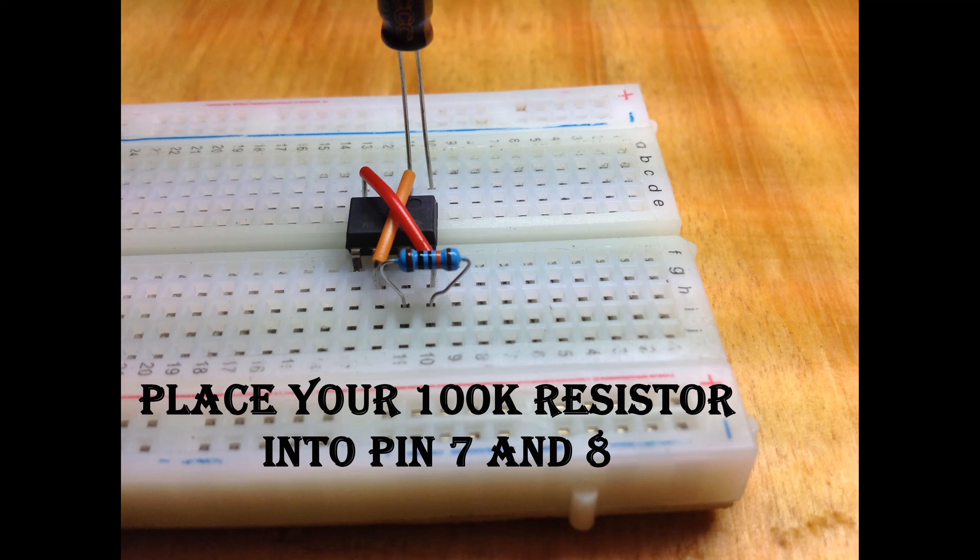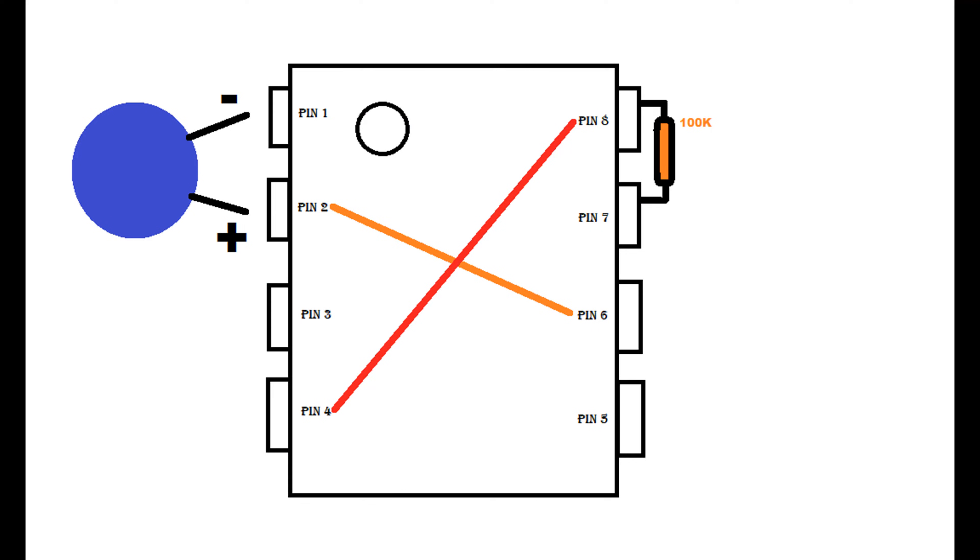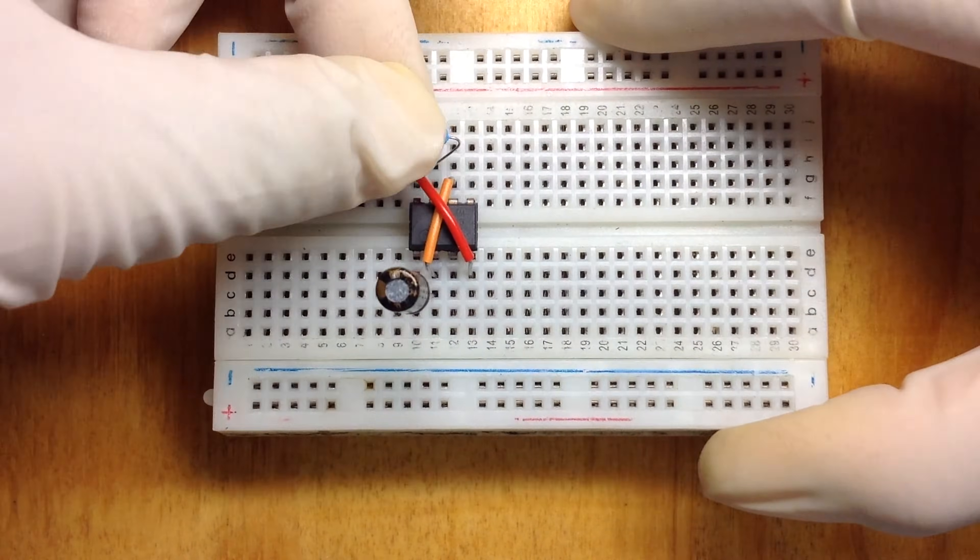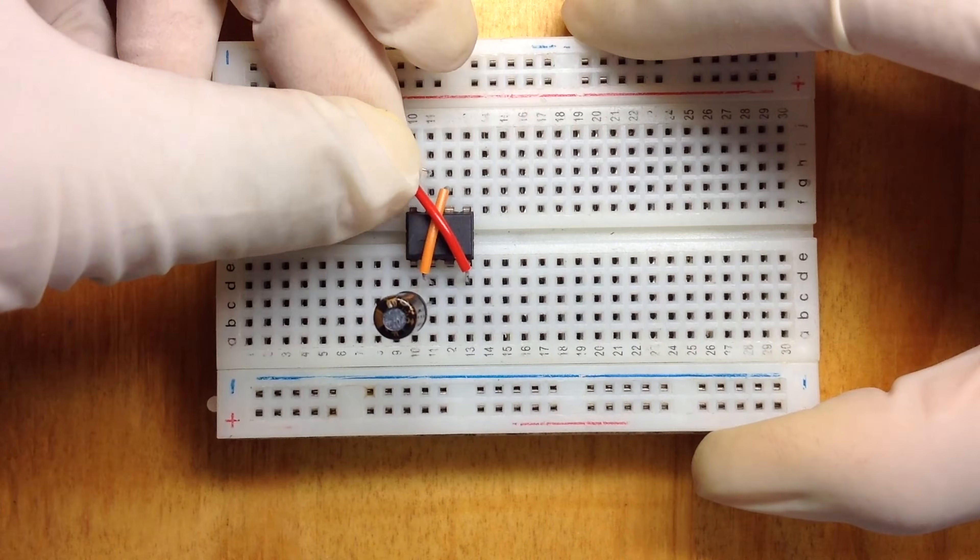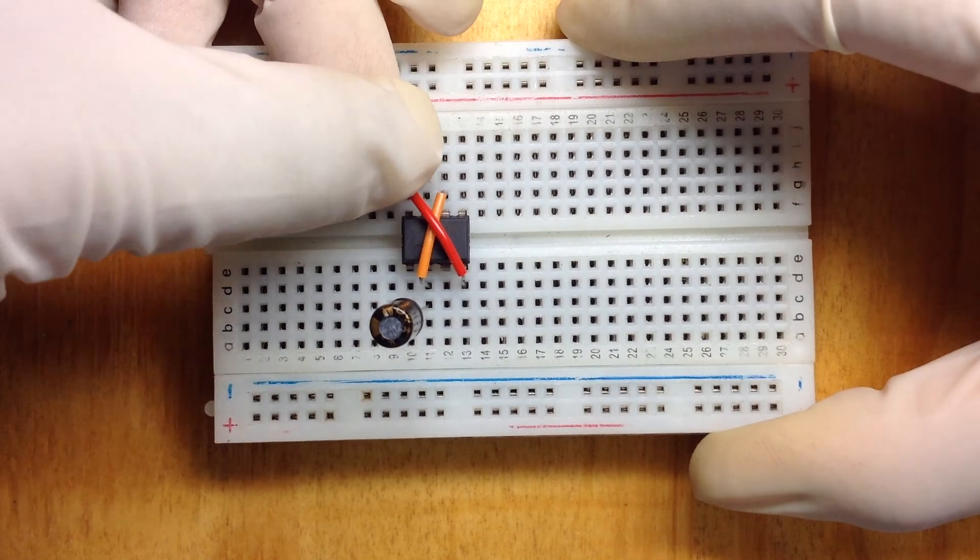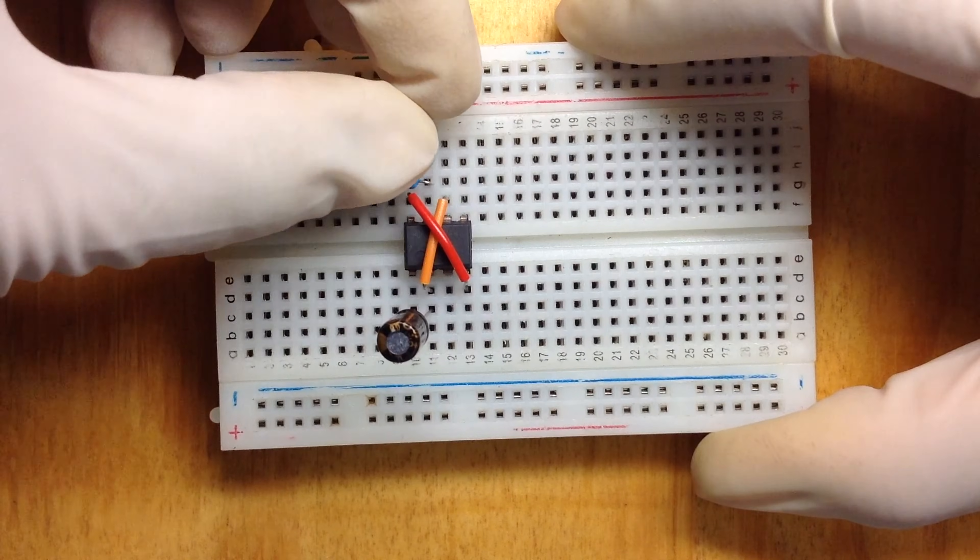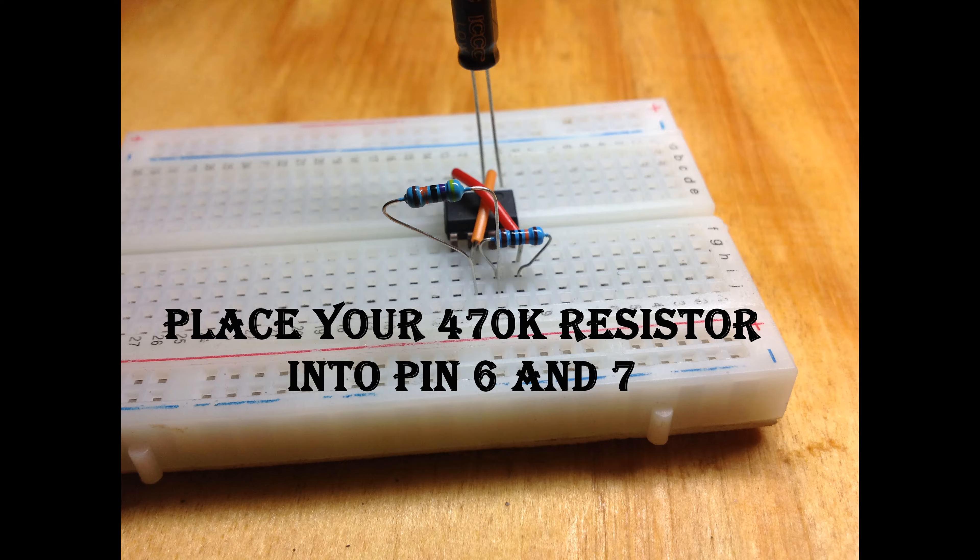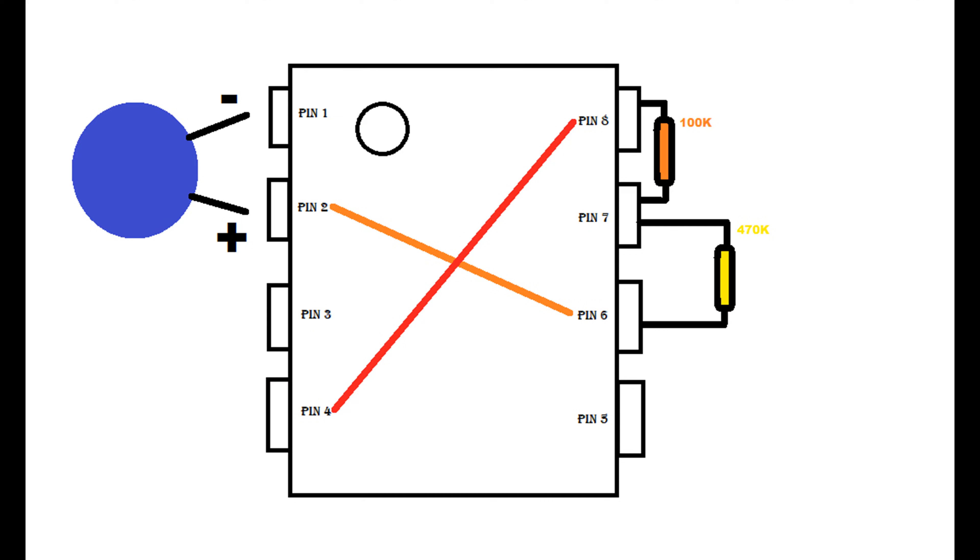Connect the 100k ohm resistor to pin 7 and pin 8 of the IC. Connect the 470k ohm resistor to pin 6 and 7 of the IC.